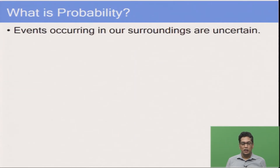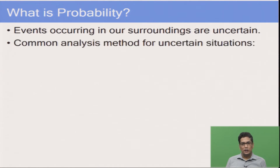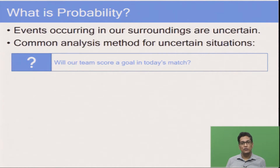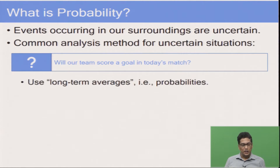Let us first understand what is probability. In our surroundings every day we experience many random events where the outcomes are not fully predictable or uncertain. For example, if I ask whether it will rain today or not, we cannot say with certainty. To answer such questions we take long term averages. We look at a team's performance in the past and based on that we make a guess about their chance to score a goal today. Such long term averages are interpreted as probabilities.